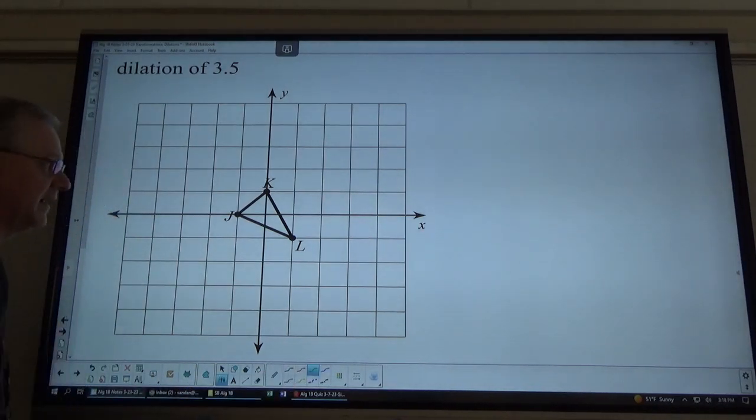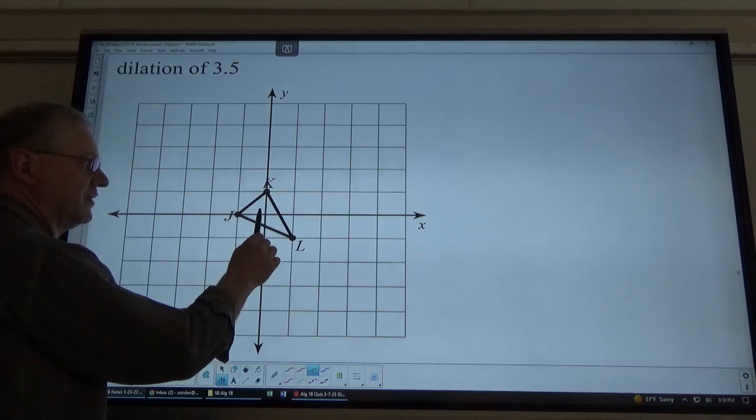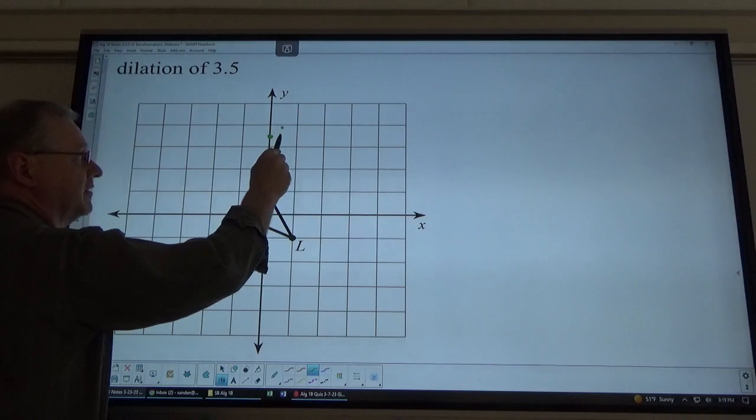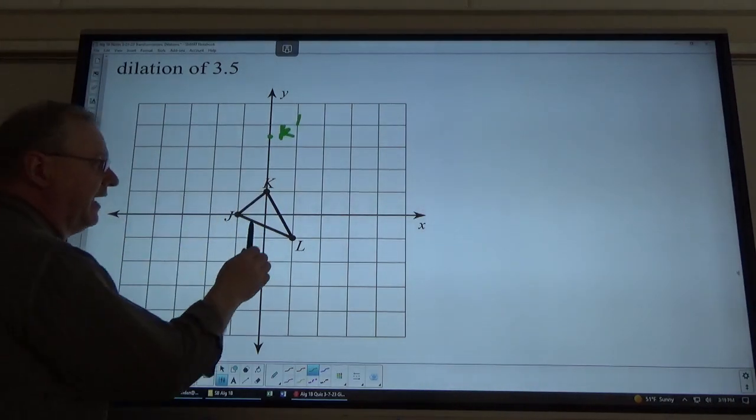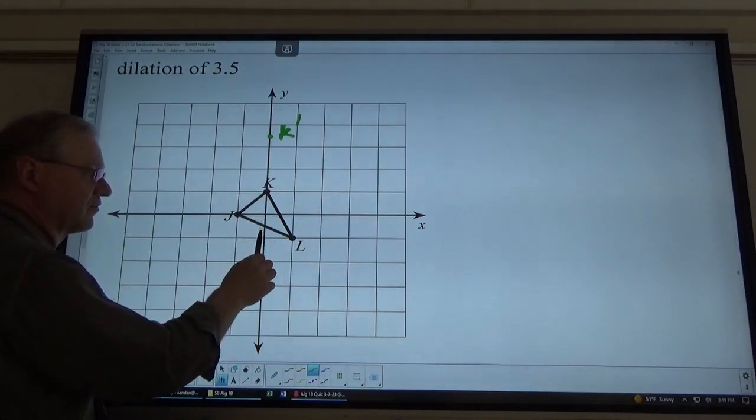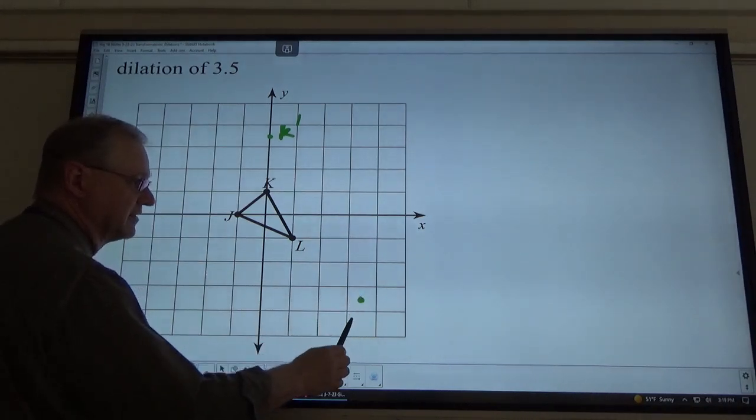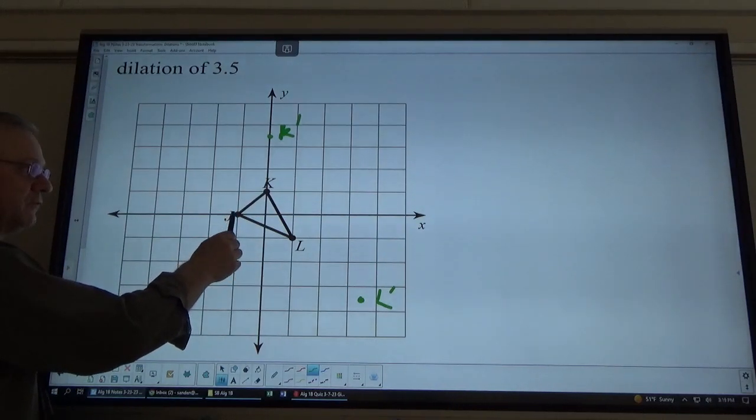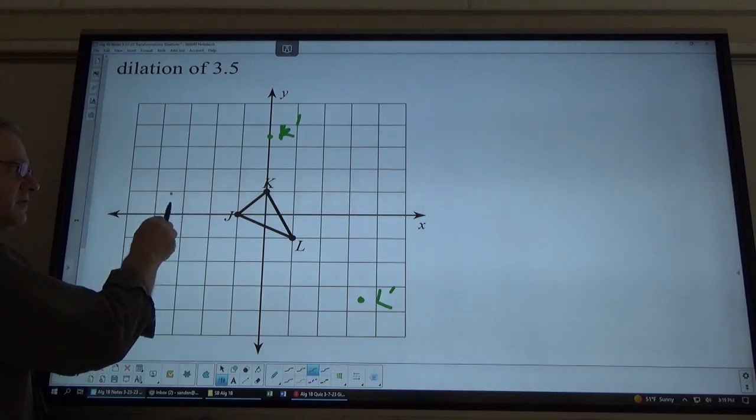So, if I'm taking this triangle and going out 3½ times movement, this is up straight 1. So, 3½ times that would be 3½. 1, 2, 3½. There's your K prime. Okay. There we go. L is down 1 right 1. So, that's down 3½. Right 1, 2, 3½. Right in the center of that. L prime. J is directly left 1. So, that's left 1, 2, 3½. J prime.